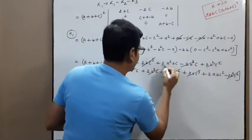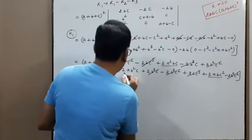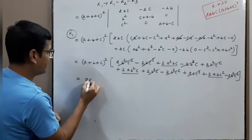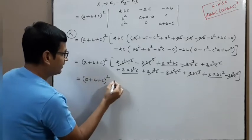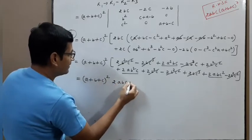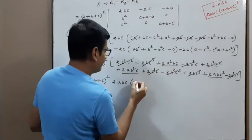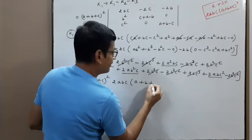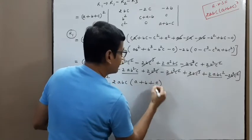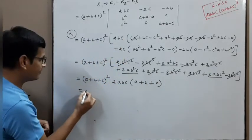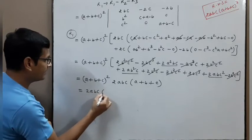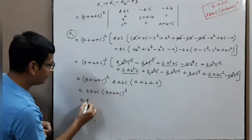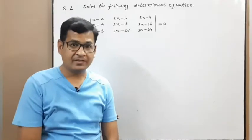The remaining terms: what is common? 2abc is common. So (a+b+c)² times 2abc common: a from here, b from here, c from last term. Final result: 2abc(a+b+c)³, which equals the right hand side.